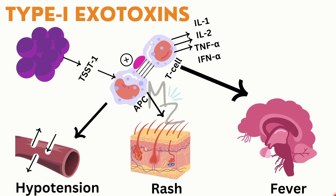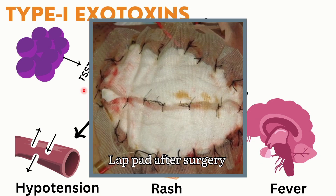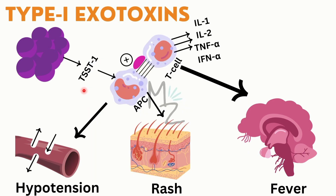Now let's look at examples. For type 1, Staphylococcus aureus releases TSST1 — toxic shock syndrome toxin type 1. It can be released when something is left in the body for a long time, such as nasal packings, tampons left in for too long, or a lap pad left after a surgical procedure. TSST1 acts as a superantigen, as it is a type 1 toxin.